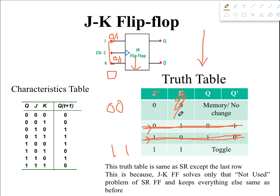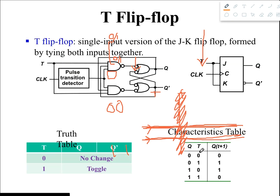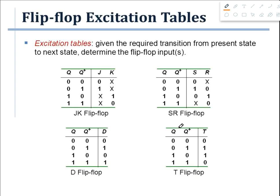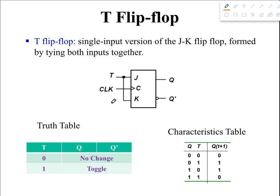We don't need to keep the same input column twice, so we cancel one column. This gives us the truth table of the T flip-flop: if T equals 0, the output is memory or no change; and if T equals 1, the output is toggle. This is what is written in the truth table shown here.